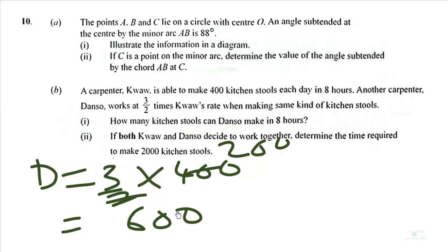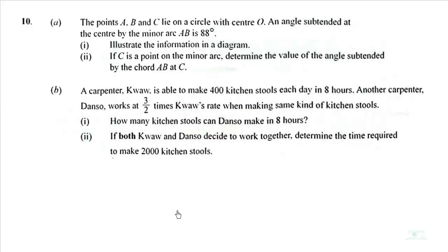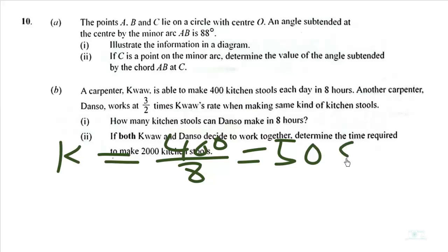So we need to determine the unit rate of both of them. We know that Kuo's hourly rate is 400 divided by 8, and that gives us 50 stools per hour.